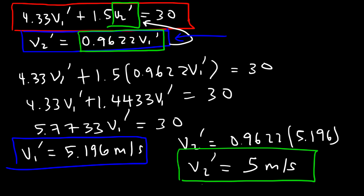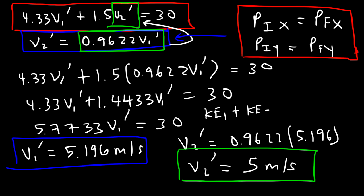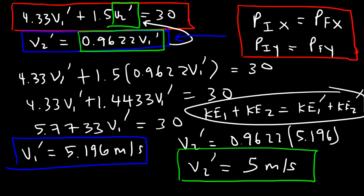When dealing with a two-dimensional collision problem, keep in mind that momentum in the x-direction must be conserved — total x-momentum before equals total x-momentum after — and the same is true for the y-direction. Satisfying these two equations allows you to solve for two unknowns. Additionally, if the collision is elastic, kinetic energy is also conserved: the total kinetic energy before the collision must equal the total kinetic energy after, giving you a third equation if needed.